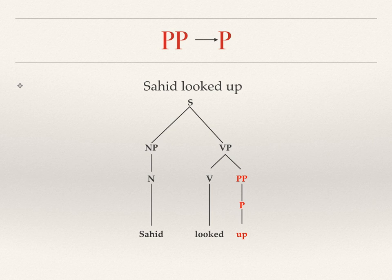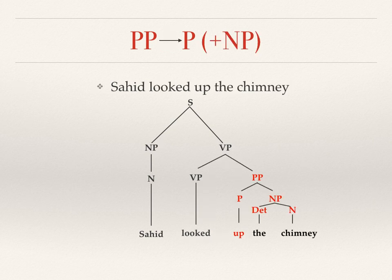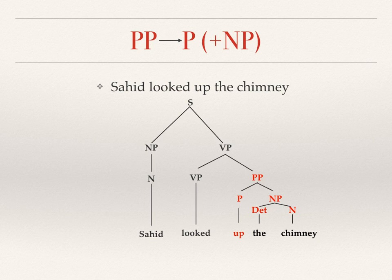Now let's go on to the next example. The next example is a prepositional phrase which is added by a noun phrase. You can see the example over here — the similar clause with the additional noun phrase: 'Saheed looked up the chimney.' Now you can see the tree diagram, particularly on the prepositional phrase part.